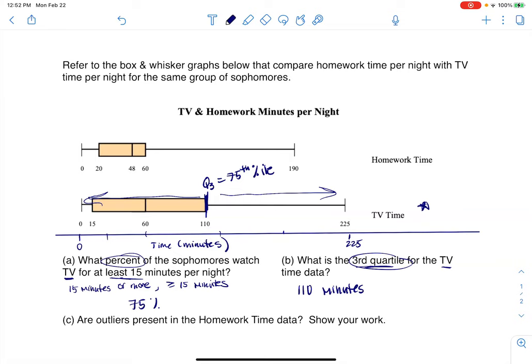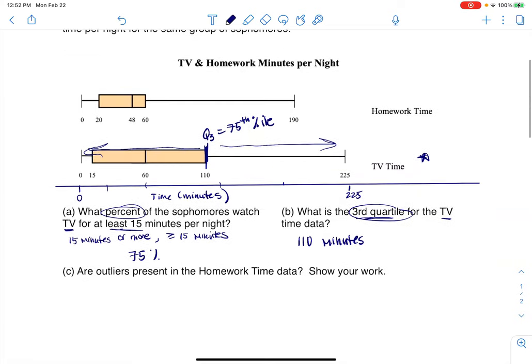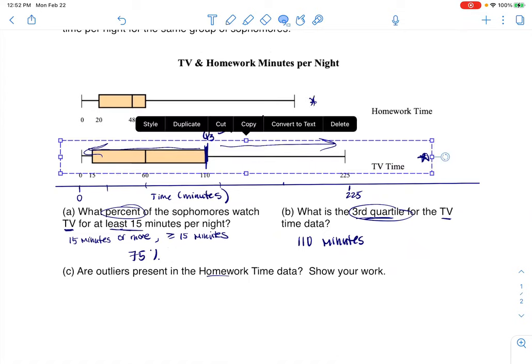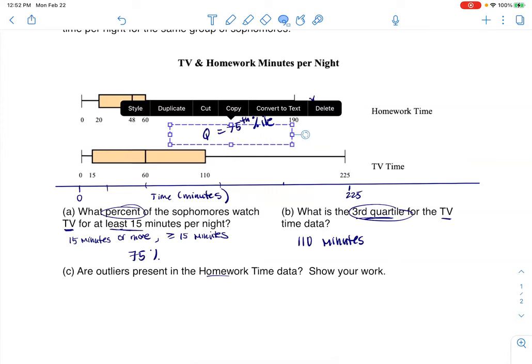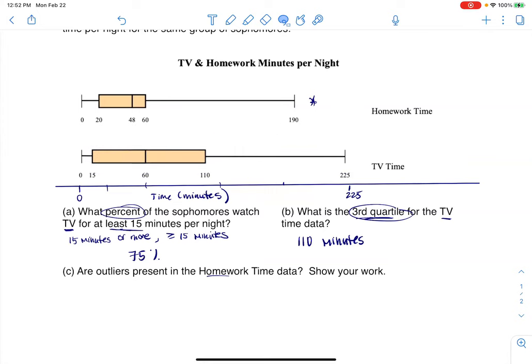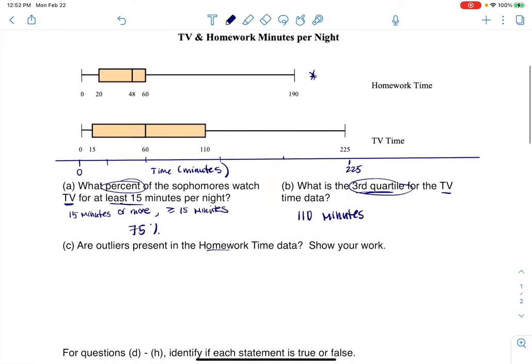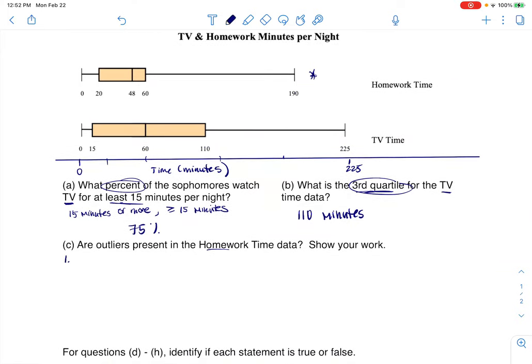Okay, and then the next one says, hey, are there outliers present in the homework time data? So I'm finally going to move up to this box plot. So again, let me just delete all the stuff we have here so it's a little bit cleaner. All right, so if I want to figure out if there are outliers present, we have three steps to do this. So let's get the IQR. So my IQR is always Q3 minus Q1. Let's see what we have here. It would be 60 minus 20 in this case, so that's going to give me 40.